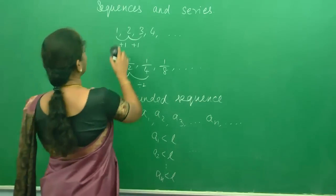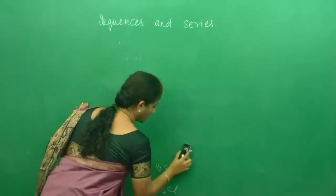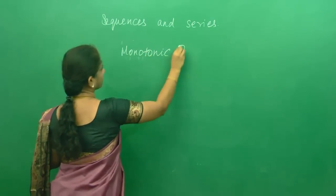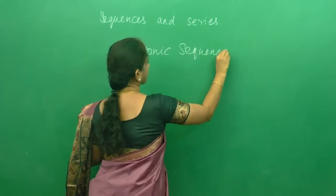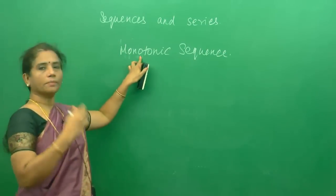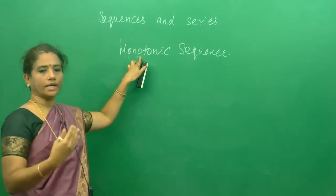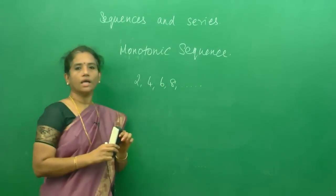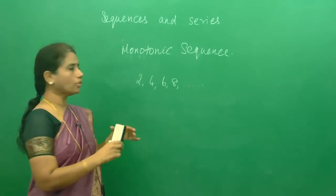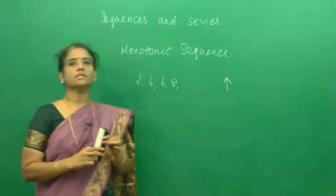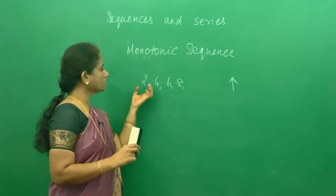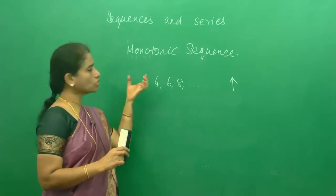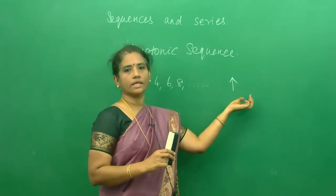So we are supposed to find that number to say whether the sequence is bounded or not. The very important sequence we are going to see now is the monotonic sequence. A monotonic sequence means either it can be increasing or it can be decreasing. For example, the sequence 2, 4, 6, 8, etc. is a monotonic increasing sequence because each term is greater than the previous term.